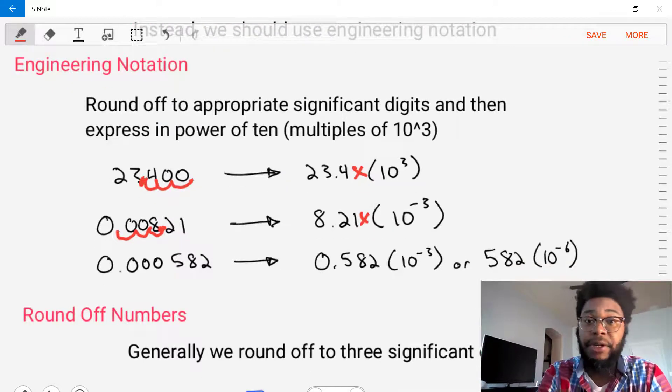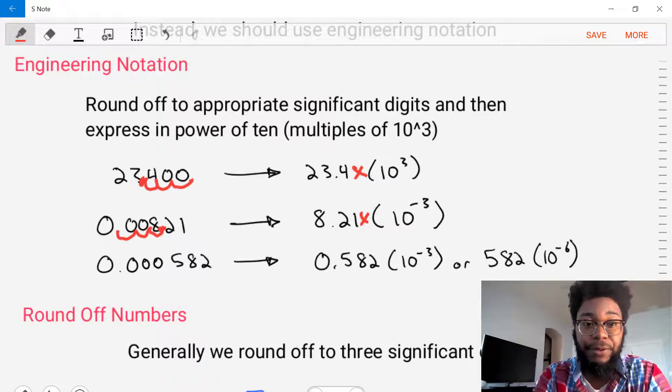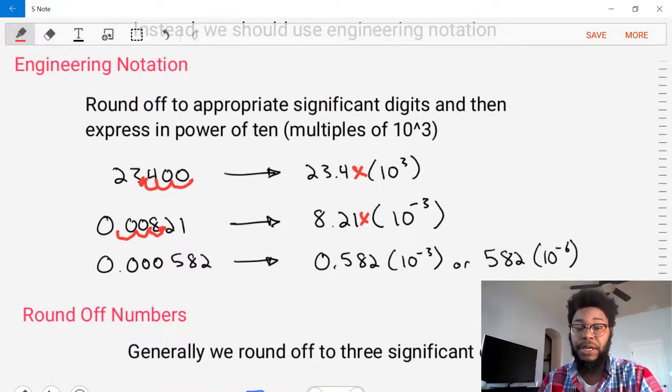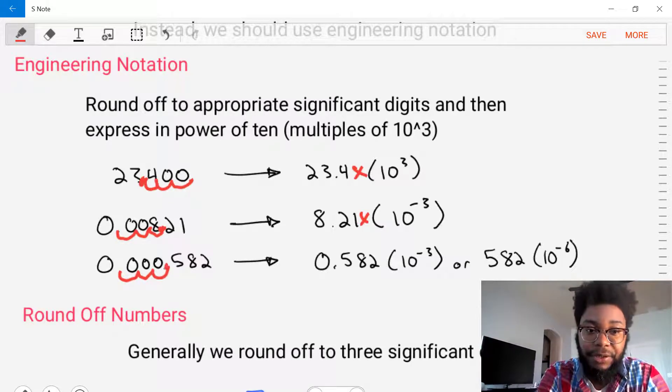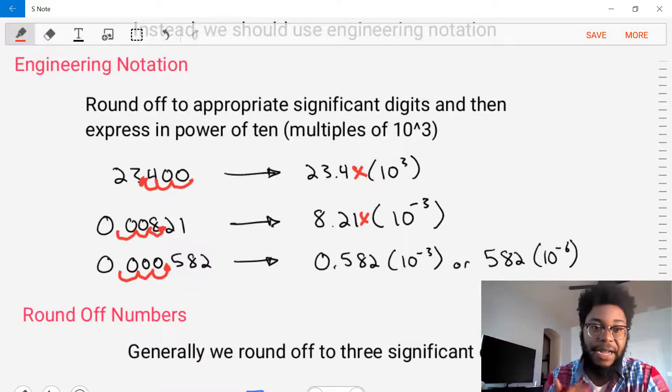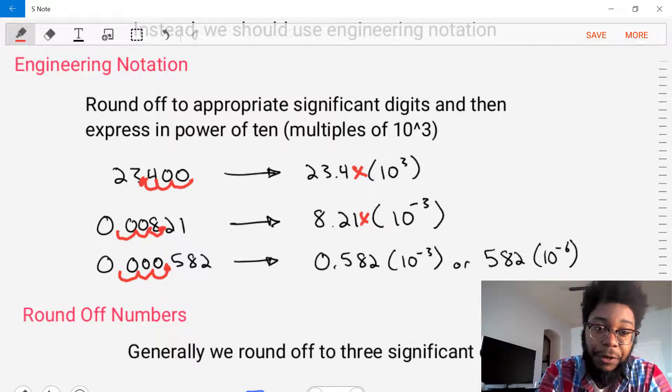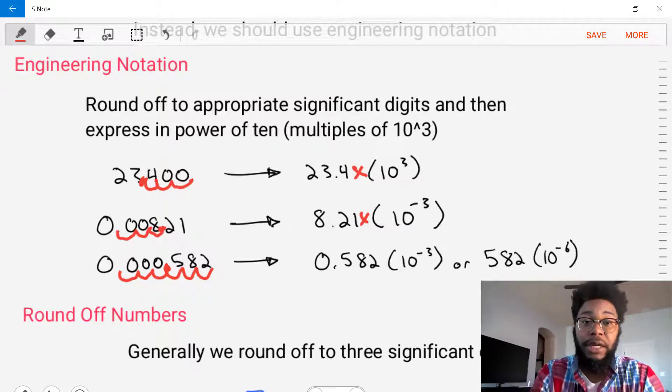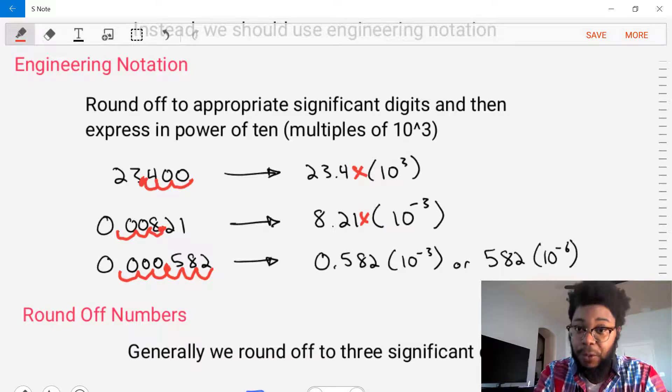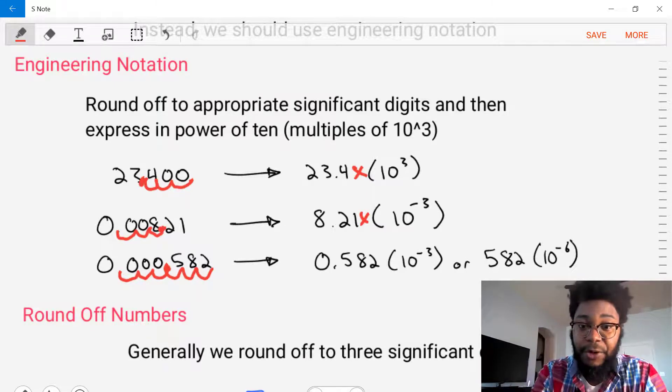And then we can do that again for another example. This is an example of 0.000582. And what we'll do here is we'll go ahead and do that multiples approach. Move it one, two, three points, and we'd end up with 0.582. That's okay. Or another option is we can move it another three points and have 582. And either of those two choices is appropriate because we're at a multiple of three. In our first case here, we get 0.582 times 10 to the negative three. And our second case, we get 582 times 10 to the negative six. And either of those is appropriate.